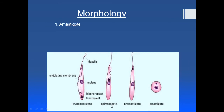The third form is the epimastigote. It has a cylindrical body, a central nucleus, and the kinetoplast is placed near the nucleus. The flagellum is placed anteriorly, and there is an undulating membrane. The undulating membrane is a lateral expansion of the plasma membrane, associated with the flagellum, connecting it to the body of the parasite.